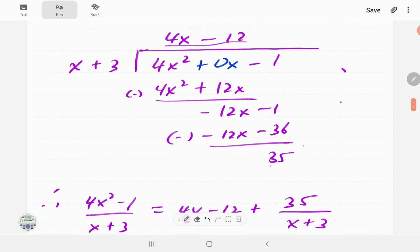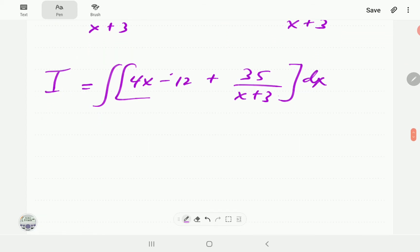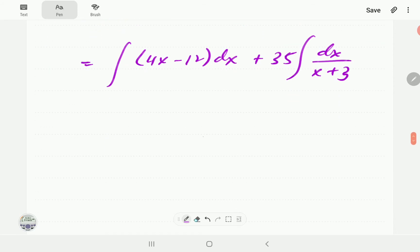Let's call it I. We can write it as the integral of 4x - 12 plus 35 over x + 3. And then by the properties of integration we can split this into two integrals: first 4x - 12 and then this one we can write as 35 times the integral of dx on x + 3.